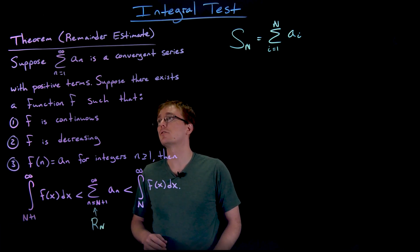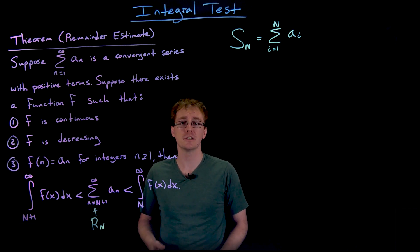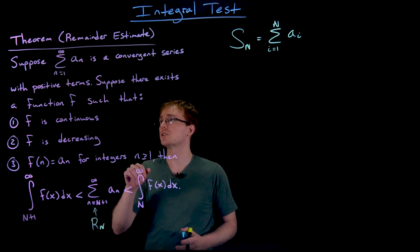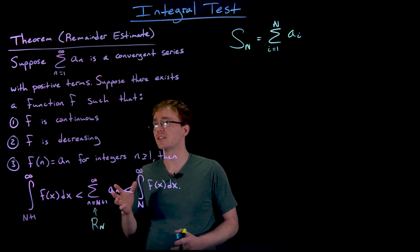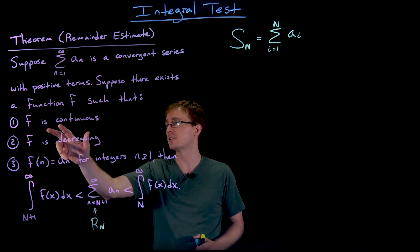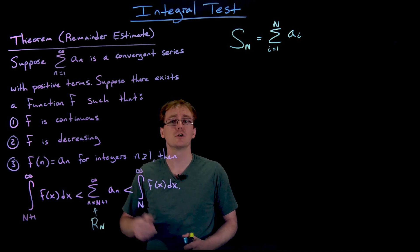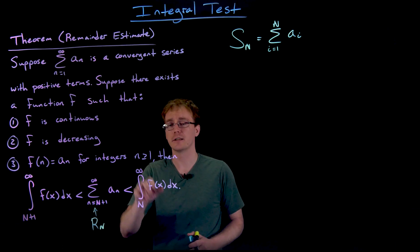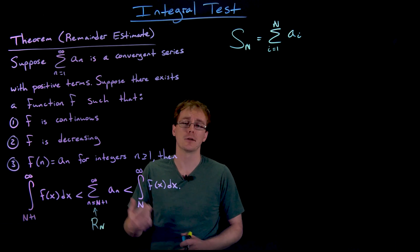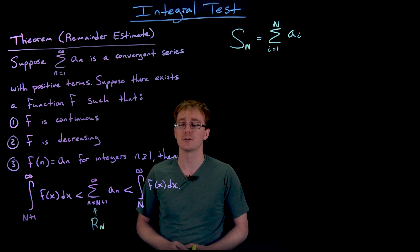So suppose the series — the sum from n equals 1 to infinity of a sub n — is a convergent series, perhaps determined to be convergent using the integral test, so it's a convergent series with positive terms. Suppose there exists a function f such that the three criteria for the integral test are met: f is continuous, it is decreasing, and it generates the terms in our series as we plug in corresponding integers — plugging in n equals 1 gives a sub 1, n equals 2 gives a sub 2, and so on.